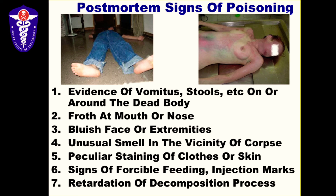Bluish face or extremities indicate cyanosis and respiratory failure — if it cannot be accounted for by anything else, suspect poisoning. Unusual smell in the vicinity of the corpse, especially if pronounced on opening the body at autopsy — the gastric contents are an extremely important finding. Peculiar staining of clothes or skin that cannot be accounted for by anything else; signs of forcible feeding or injection marks — very significant. Some poisons retard the decomposition process: if the stage of decomposition does not fit the expected timeline, suspect a poison like arsenic that retards decomposition — we'll look at that in detail when discussing heavy metals.